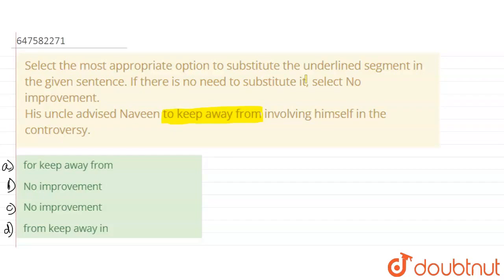The sentence is: His uncle advised Naveen to keep away from involving himself in the controversy. Naveen's uncle advised him to keep away from involving himself in the controversy. The sentence means this. Now let's talk about the options. It is appropriate.